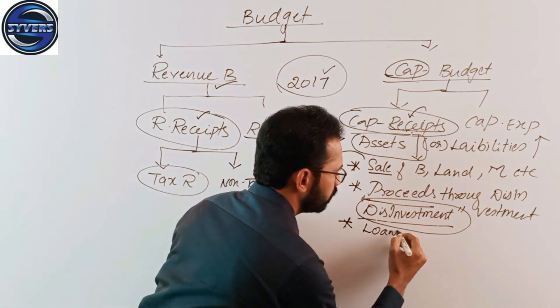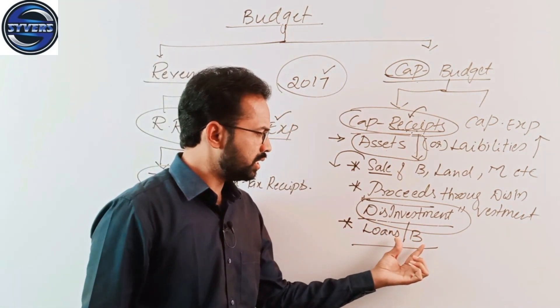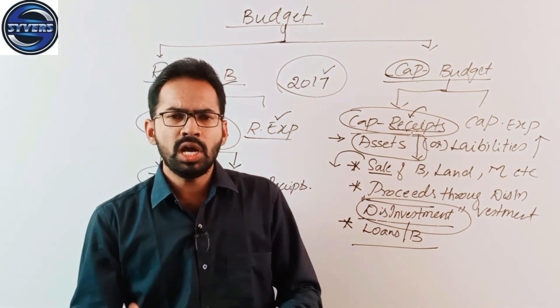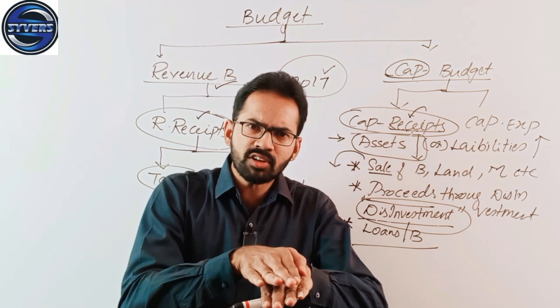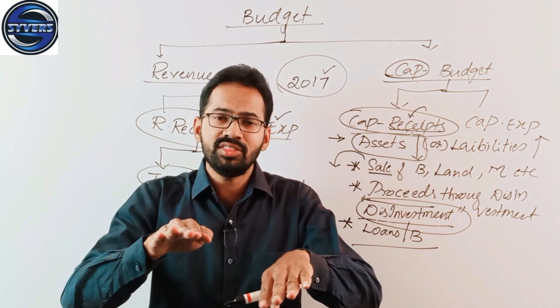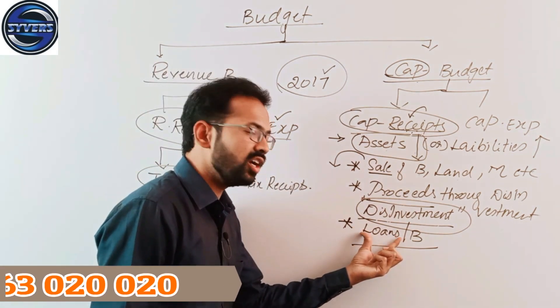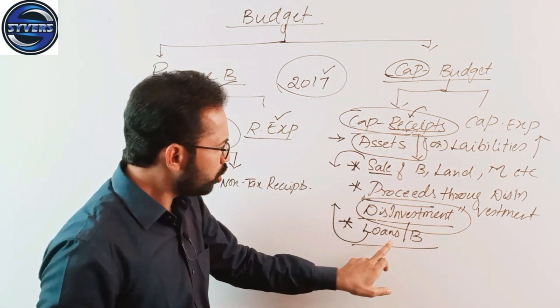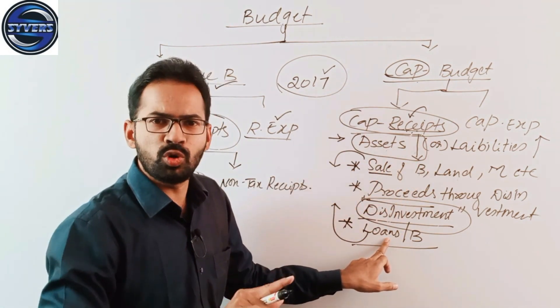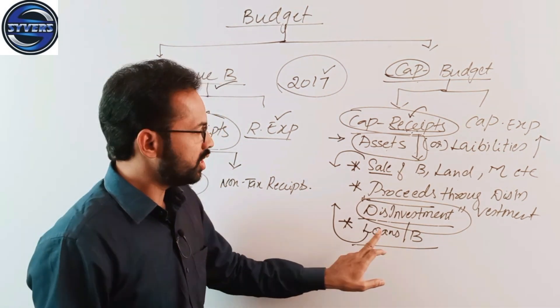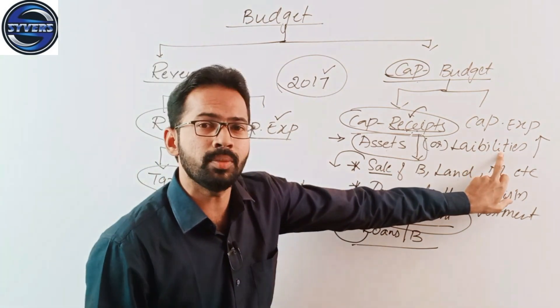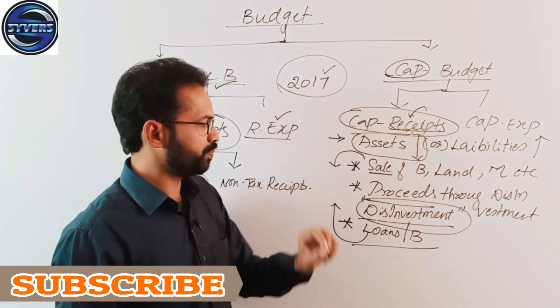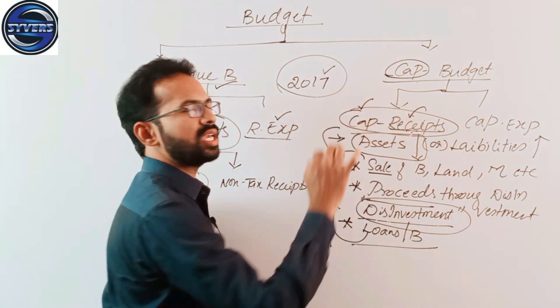The most important example is loans or borrowings. Government every year gets more amount through loans or borrowings. When expenditure exceeds income, government goes for borrowings. Loan is a receipt that increases liabilities. Loan is not recurring in nature. Loan creates debt and increases liabilities, so loan or borrowings fall under capital receipts.